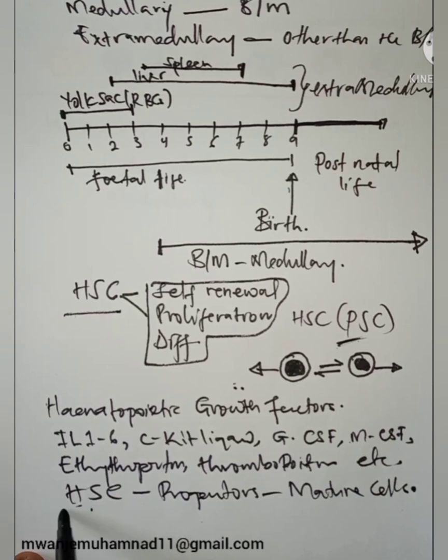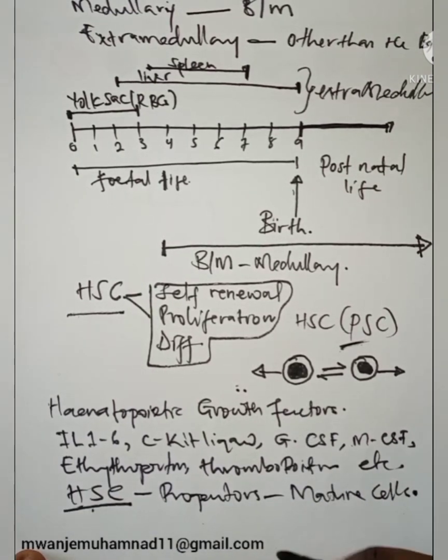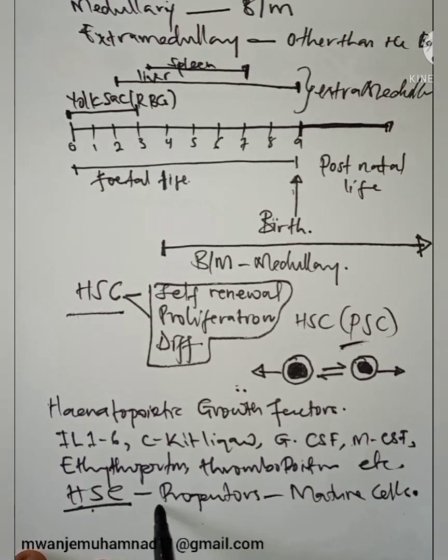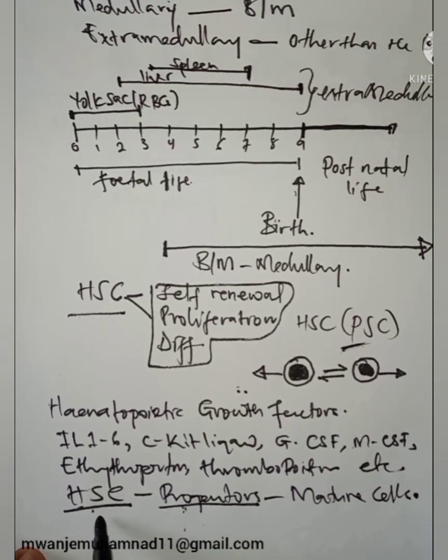On the HSC, it is self-renewal, proliferation, and differentiation. On the progenitors now, the progenitors are the next step after the HSCs. Progenitors can be of the myeloid or lymphoid. Now we are getting more committed here. The cells are general, they can differentiate into all the cell types. Now the progenitors can be for the myeloid lineage or lymphoid lineage.